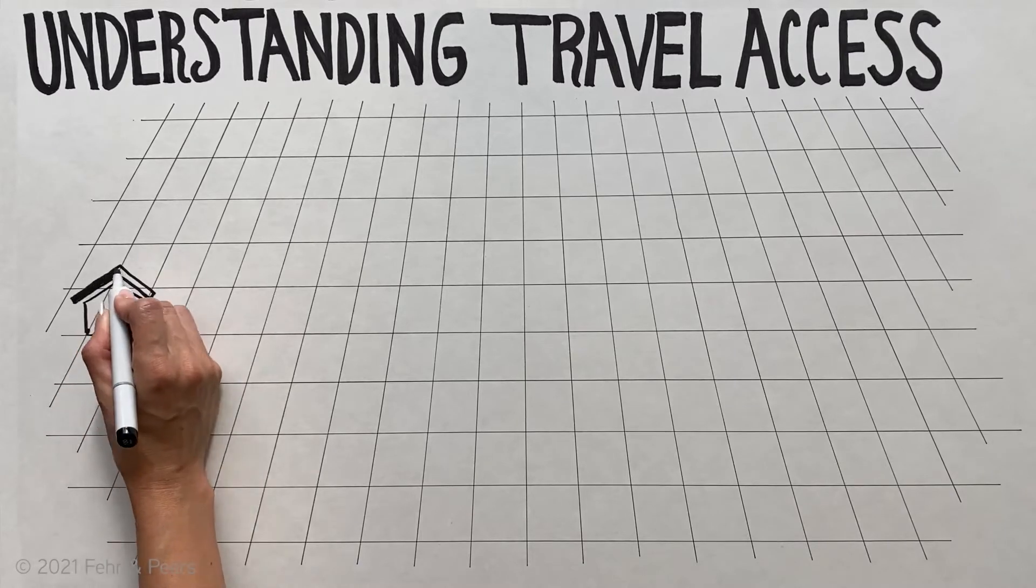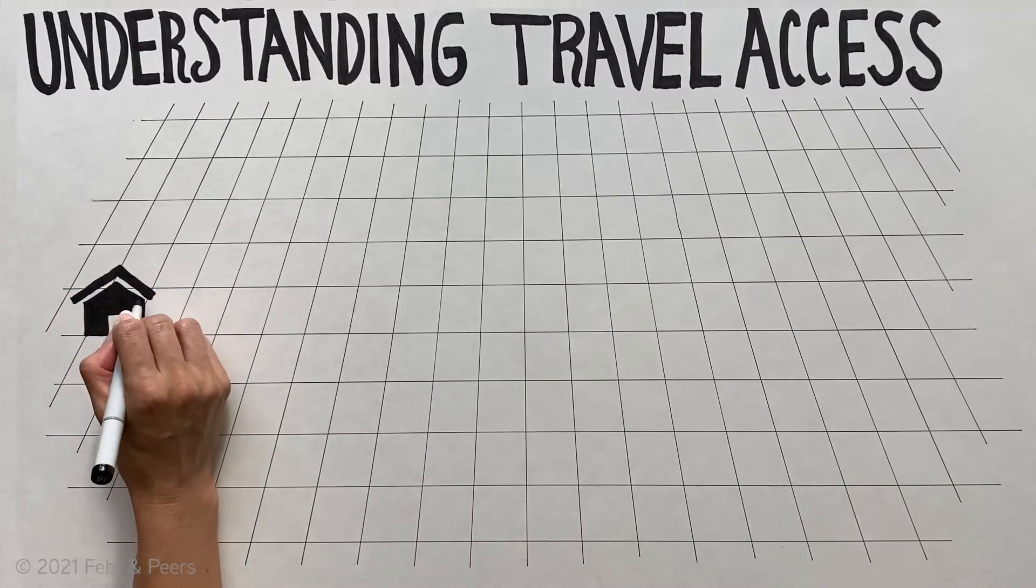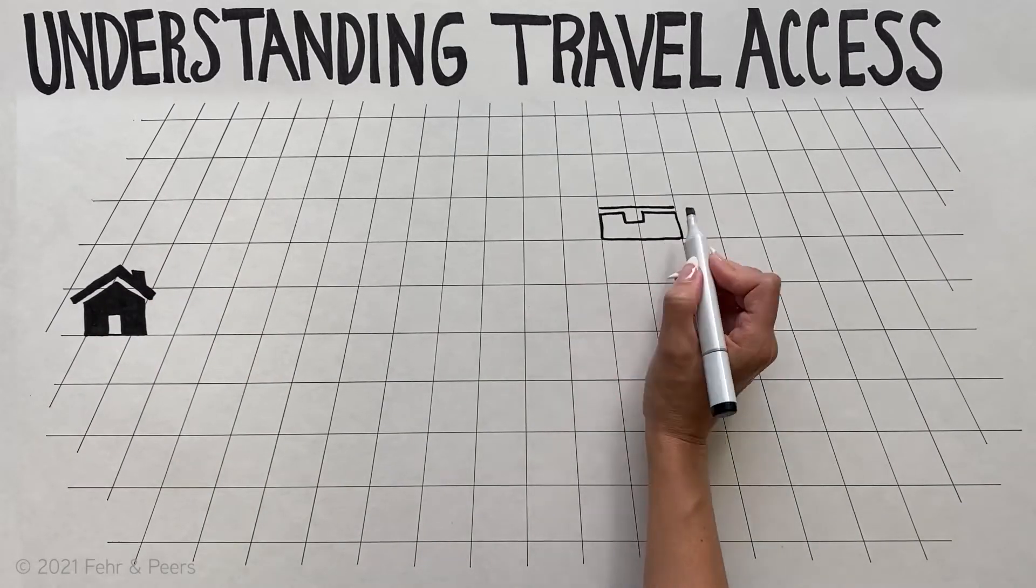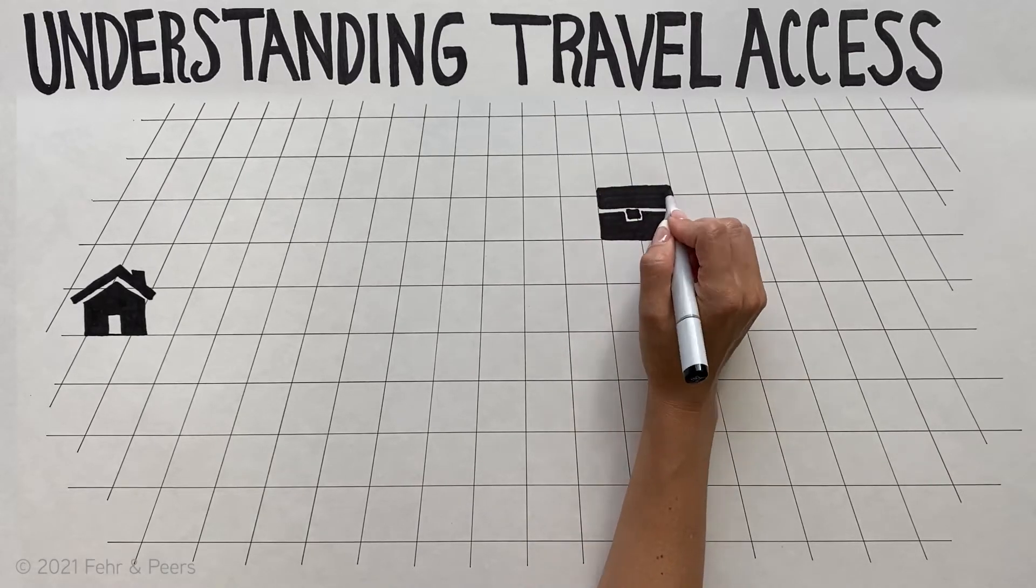Using travel access data is one part of a larger equation that helps us understand how people travel in their communities, which transportation options are readily available to them, and how easy or difficult it is to get to their desired services, goods, and social activities.